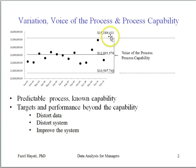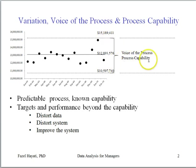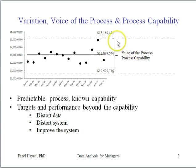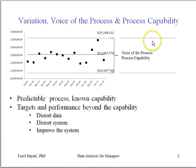This is the range of variability in this process, known as process capability, or the voice of the process. This is a predictable process, meaning you can predict the behavior of this process into the near future.